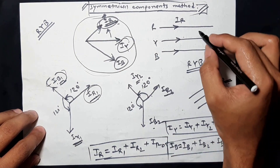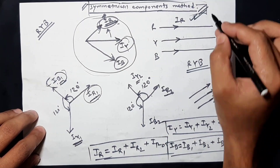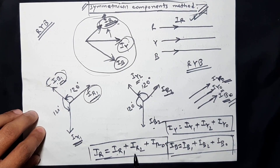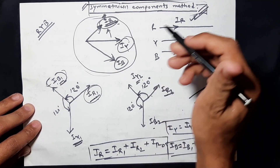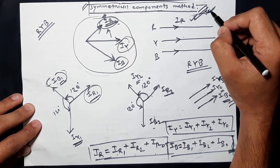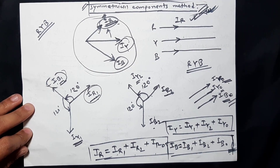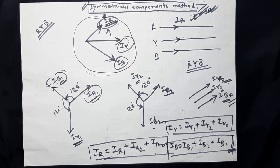In summary, each phase has three currents: positive sequence, negative sequence, and zero sequence components. This is how we apply the symmetrical component method. In the next video, we will cover the derivation method. Thank you.